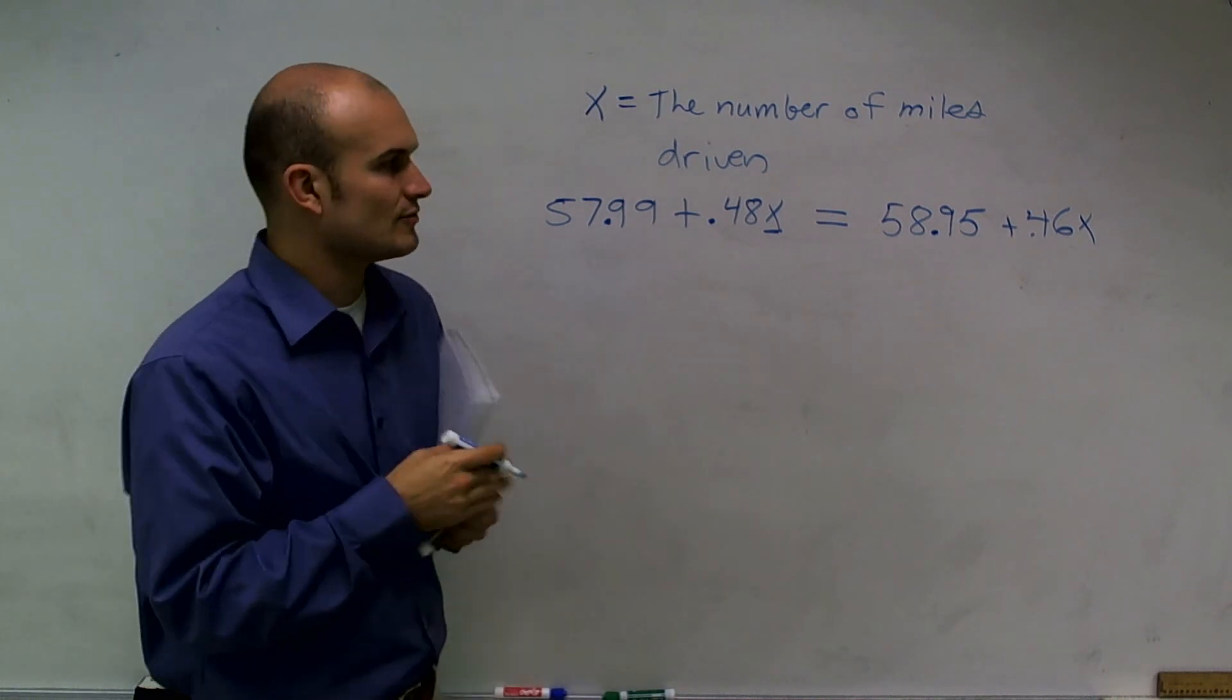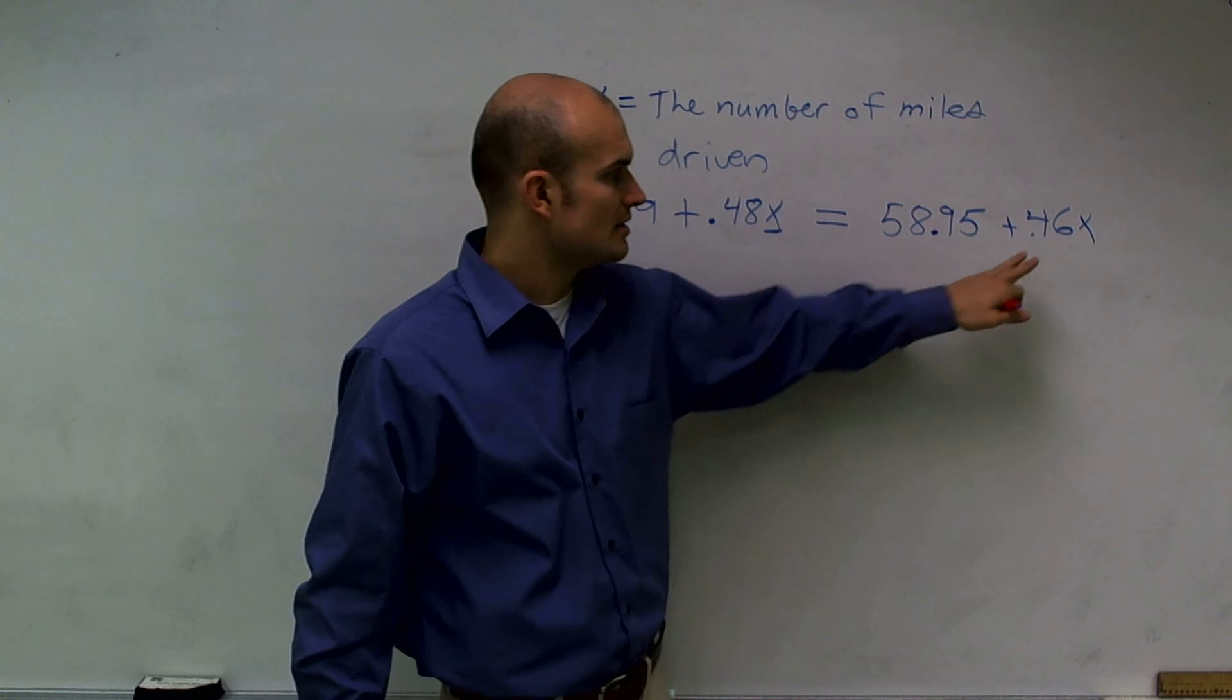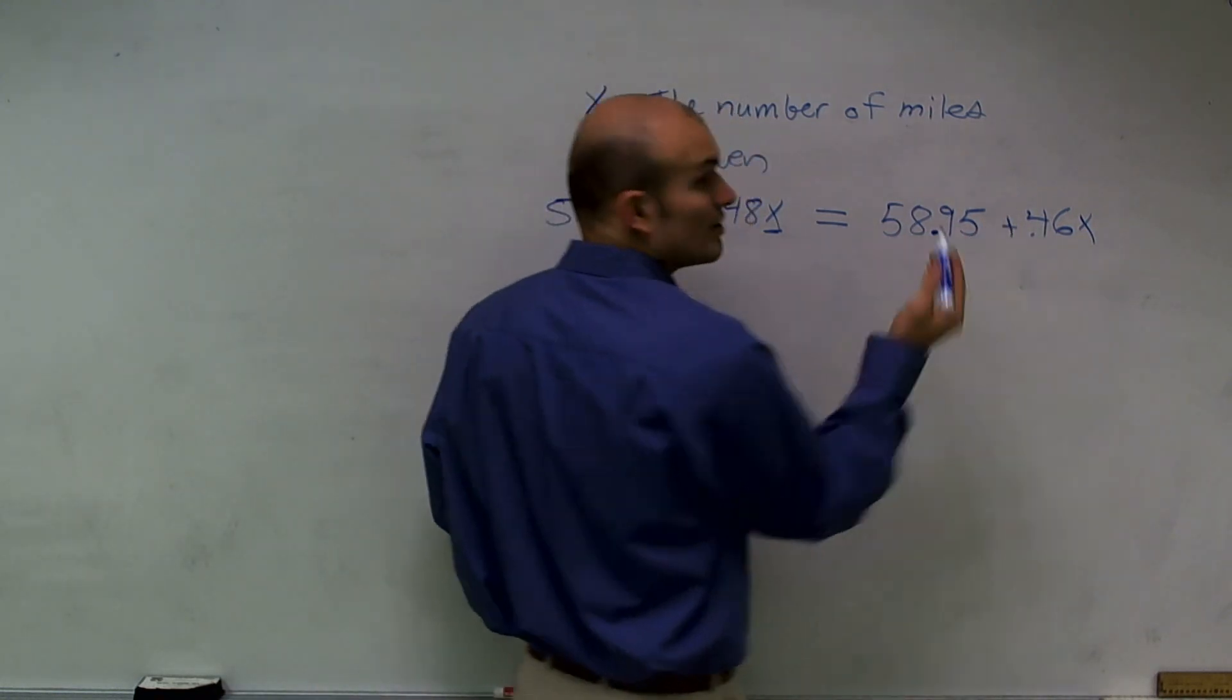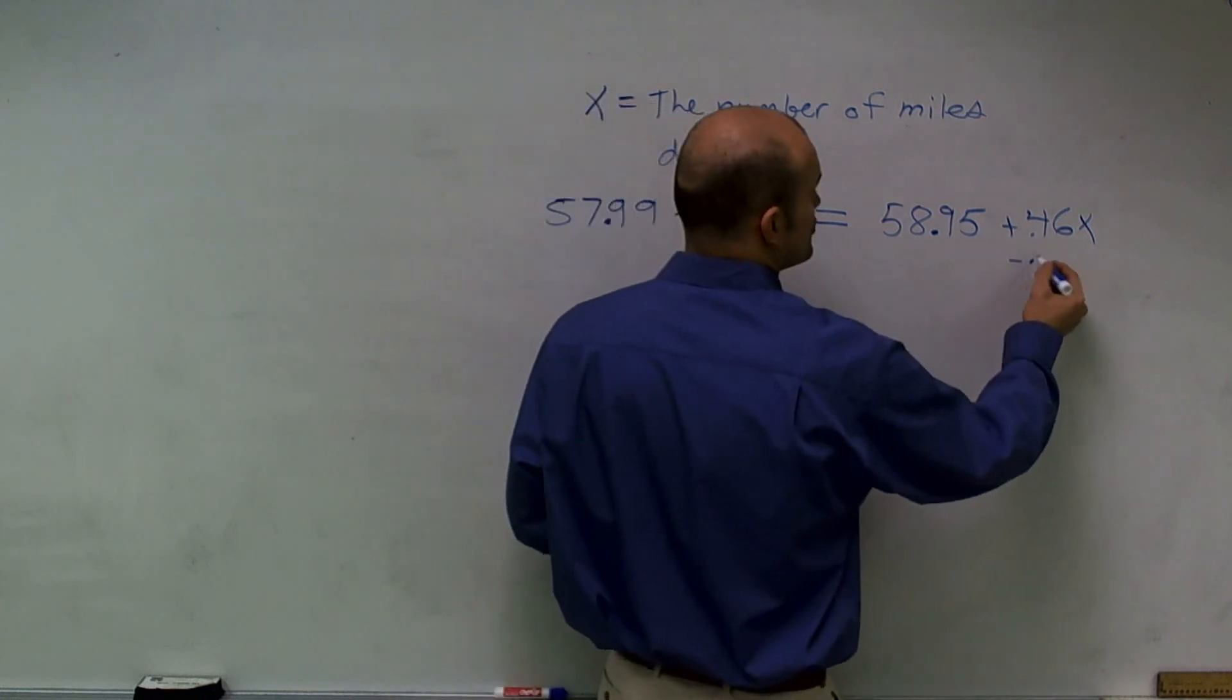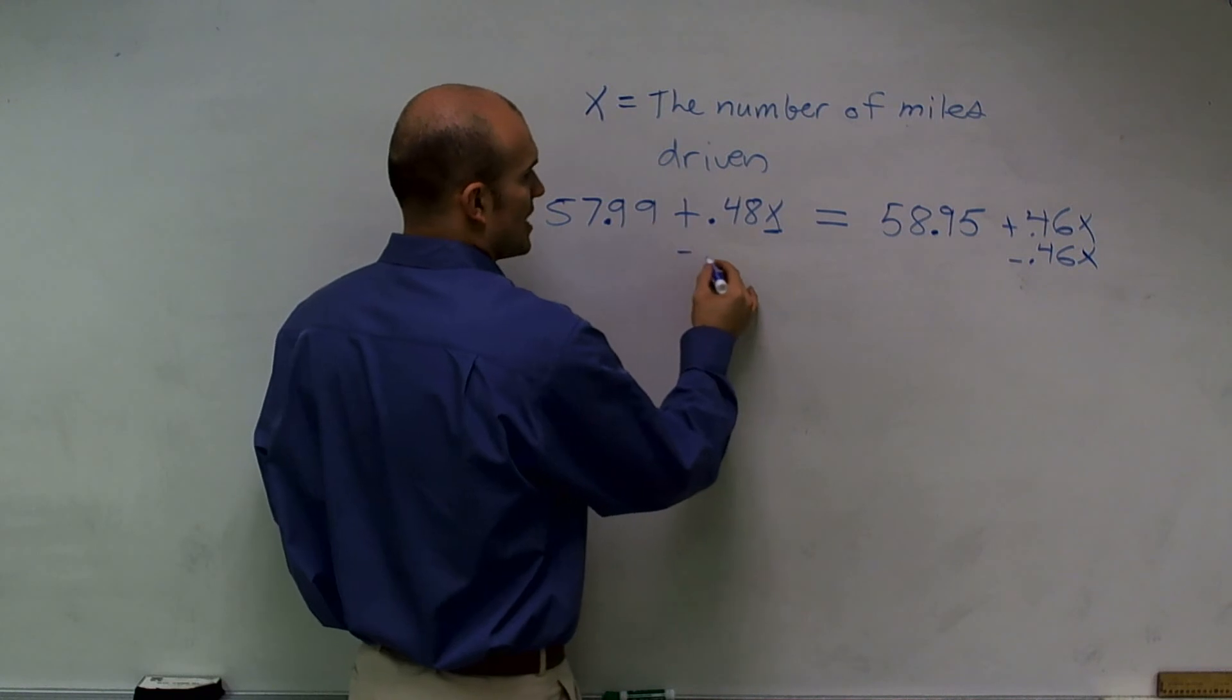So what I want to do is, I want to get rid of the smaller variable. It's just going to make my math a little bit easier. So I'm going to get rid of a positive 0.46x. So I'm going to subtract a negative 0.46x on both sides.